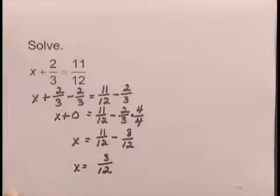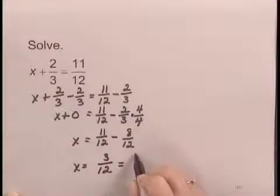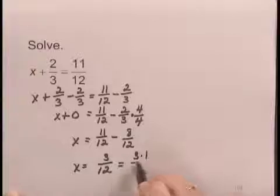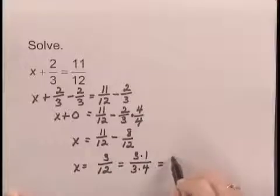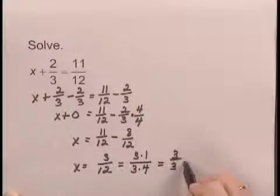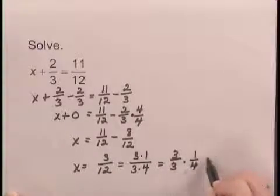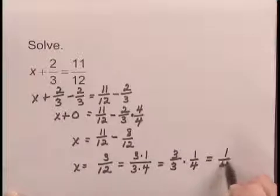Now 3/12 can be simplified. I can simplify by factoring 3 as 3 times 1, and 12 as 3 times 4. I can factor out 3 over 3, and write the solution as 1/4.